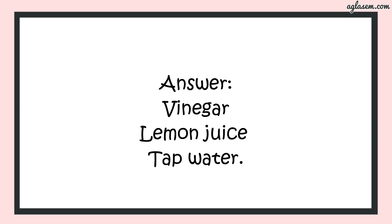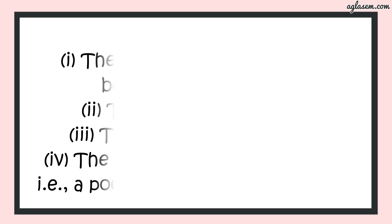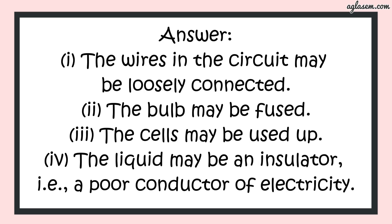Question number 4 says: the bulb does not glow in the setup shown in the figure. List the possible reasons and explain your answer. The answer is: the bulb may not glow because of the following reasons. 1. The wires in the circuit may be loosely connected. 2. The bulb may be fused. 3. The cells may be used up. 4. The liquid may be an insulator, that is, a poor conductor of electricity.